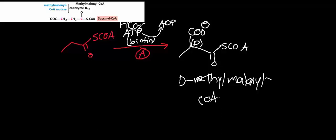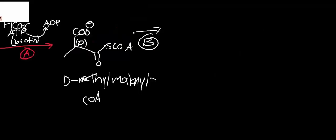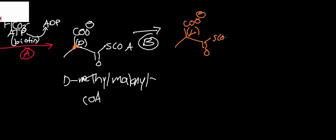The product is specifically the D-isomer: D-methylmalonyl-CoA. This then reacts with methylmalonyl-CoA epimerase, which epimerizes the carboxylated carbon, flipping the stereochemistry to give the L-isomer: L-methylmalonyl-CoA. If you need more detail on propionyl-CoA catabolism, there is a full video on it in the beta-oxidation playlist.